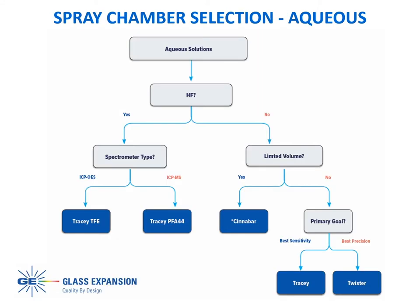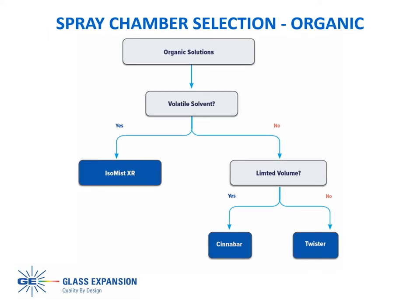This basic selection guide walks the ICP analyst through a series of questions, leading to the proper Glass Expansion spray chamber for a variety of aqueous sample types. Similarly, this guide summarizes the proper selection of a spray chamber based upon the type of organic solvent analyzed. We just wrapped up our petrochemical webinar, which is now available for on-demand viewing and covered organic samples and solvents in great detail. If this is your industry, I suggest you take the time to view this great resource. In the next few slides, I will detail the spray chamber selection process a bit further.